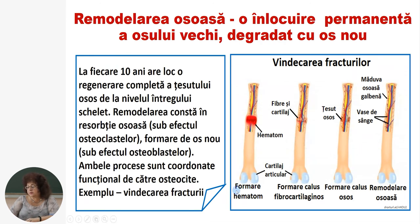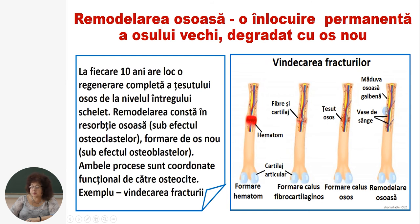Un exemplu de remodelare îl vedem în cazul vindecării fracturilor. În imagine observați etapele vindecării fracturilor: prima — formarea de hematom în locul fracturii; a doua — formarea de calus fibrocartilагinos; a treia — formarea de calus osos; și a patra — se restabilesc vasele sanguine, astfel a avut loc remodelarea osului.